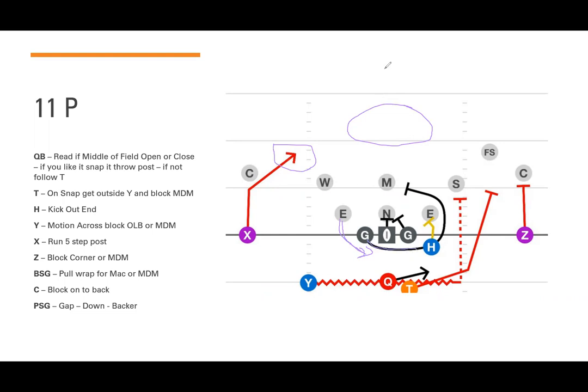If the quarterback doesn't like the pass, he snaps the ball and follows a parade of blockers through the C gap to D gap. This is not initially an outside run — it becomes outside once the quarterback gets past the line of scrimmage through what I call the tunnel of blockers. Once through the tunnel, he can kick it outside for a big run or cut it back inside.